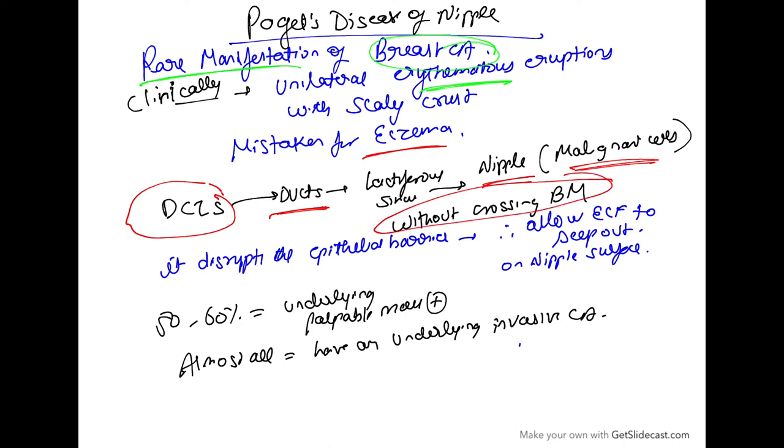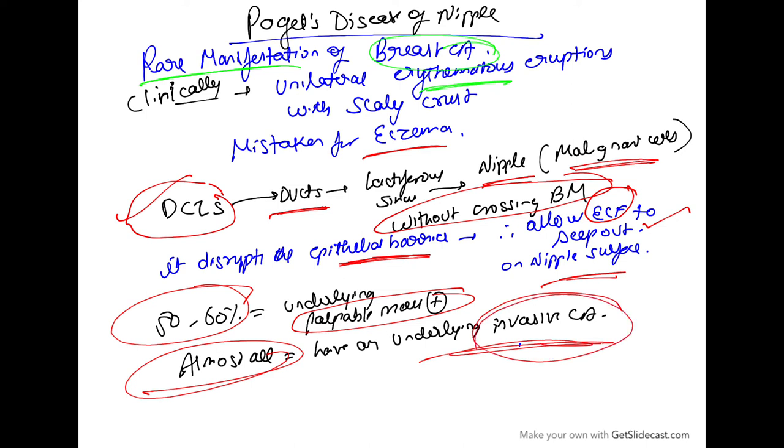There is no crossing of basement membrane because these are carcinoma in situ. It disrupts the epithelial barrier, allowing extracellular fluid to seep out on the nipple surface, giving an eczema-like appearance. Fifty to sixty percent of these patients have an underlying palpable mass, and almost all of them have an underlying invasive carcinoma.